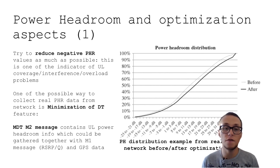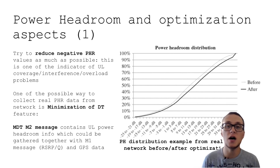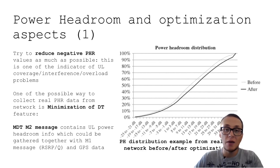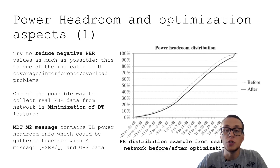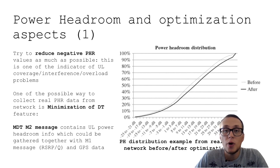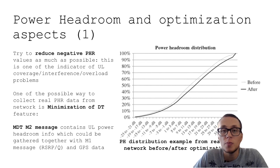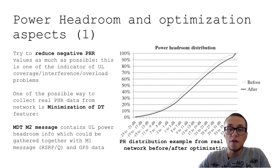MDT is a self-optimized network feature that is standardized in 3GPP. The MDC M2 message contains uplink power headroom, which can be considered very important. Not only power headroom, but also RSRP, RSRQ data, and GPS data can be collected from multiple user equipments in a real network, making MDT a powerful tool for uplink performance analysis.